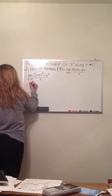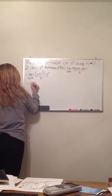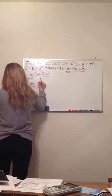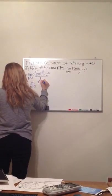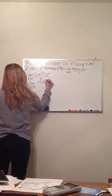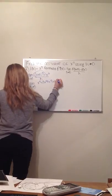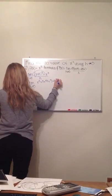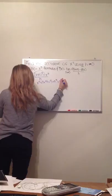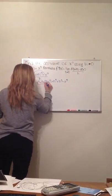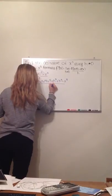Which would equal the limit as h approaches 0 to x cubed plus 3x squared h, 3x h squared plus h cubed minus x cubed, all over h.